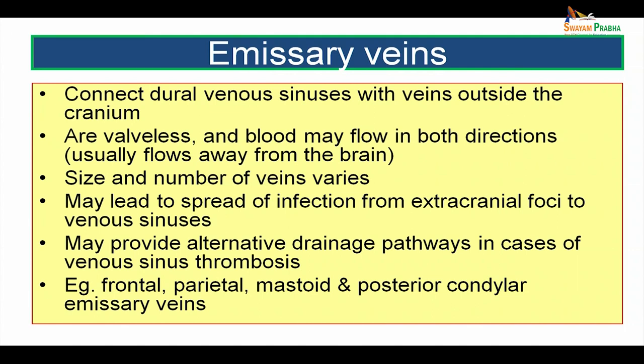Emissary veins connect the dural venous sinuses with veins outside the cranium. They are valveless and blood may flow in both directions, but usually flows away from the brain tissue. Their size and number may vary. This may lead to spread of infection from extracranial foci to venous sinuses, and may also provide alternative drainage pathways in cases of venous sinus thrombosis. Examples include the frontal, parietal, mastoid, and posterior condylar emissary veins.